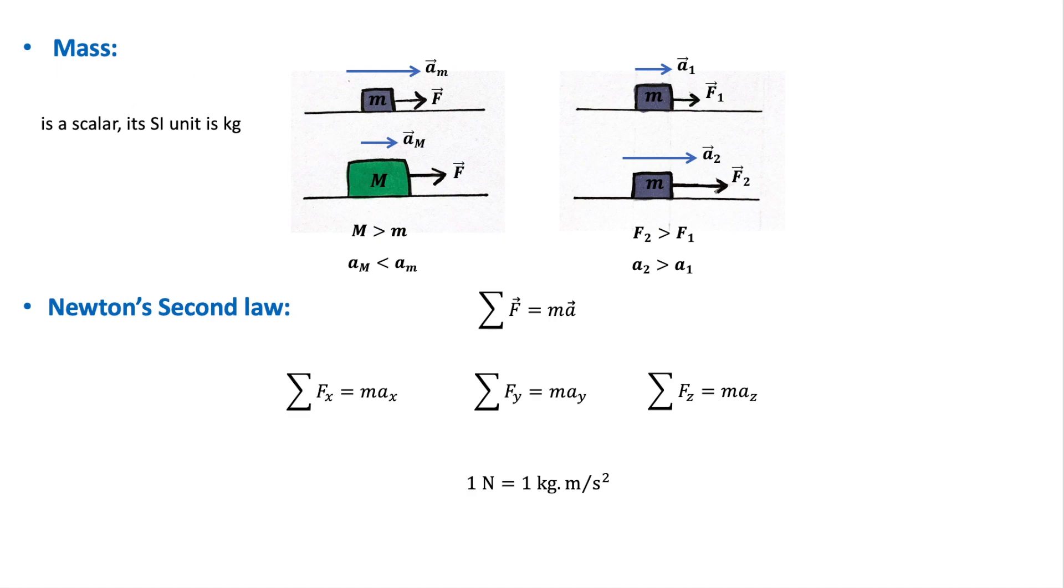So these observations were summarized by Newton in his second law of motion, which states that the acceleration of an object produced by a net external force is directly proportional to the force in a direction parallel to that force and is inversely proportional to the mass.